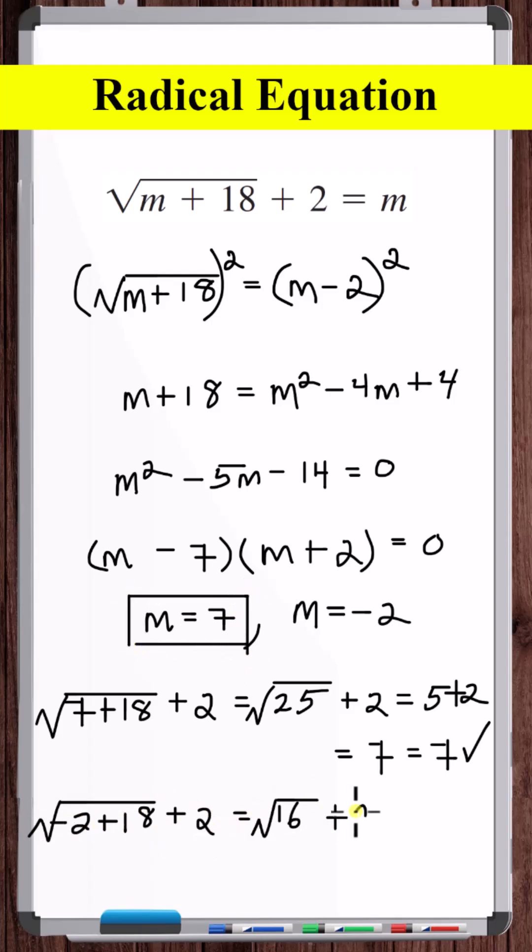Now let's check minus 2. 6 is not equal to minus 2. So minus 2 is not a solution. The only solution is m is equal to 7.